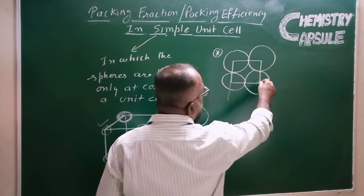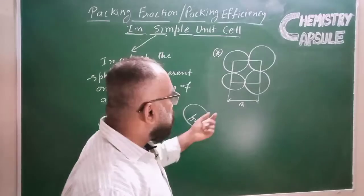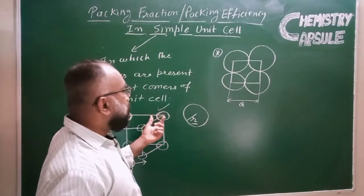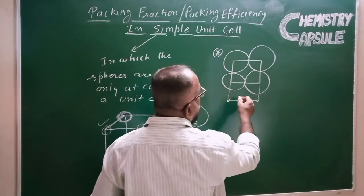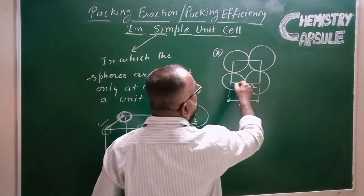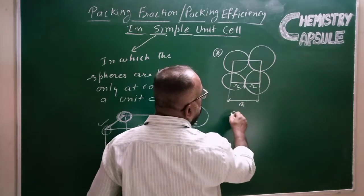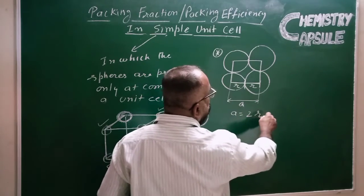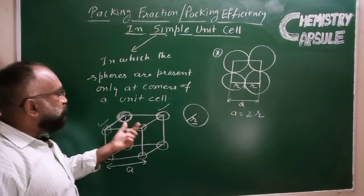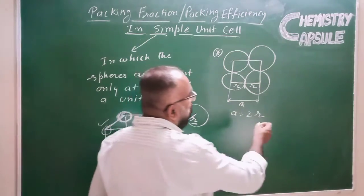Looking at this unit cell, we can see the edge length. The spheres at adjacent corners are in contact, so we can relate the edge length to the radius of the sphere. The edge length A is equal to 2R — this side is 1R and the full edge is 2R. So for a simple unit cell, A equals 2R.